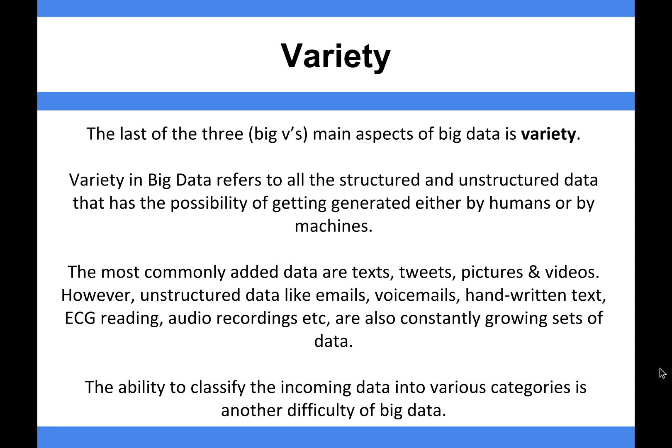To understand structured versus unstructured, think of traditional databases with rows and columns. If you can easily fit data into columns and give each thing different categories, that's structured data. But a lot of the data collected in big data sets is unstructured. That variety of structured and unstructured data makes the data sets quite messy, and messy data sets are hard to analyze. So the ability to classify incoming data into different categories is a massive difficulty of big data.